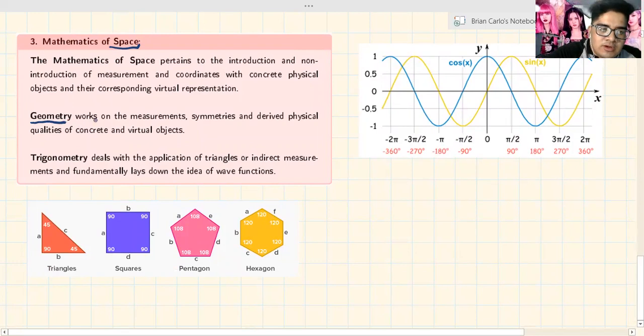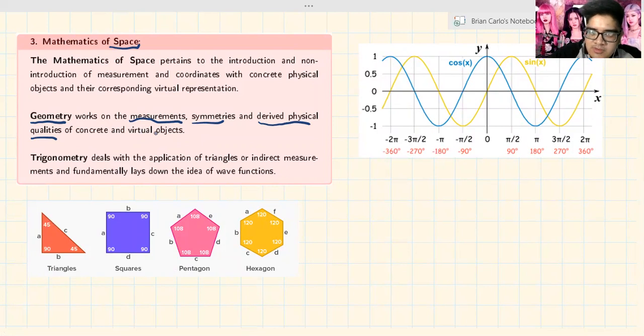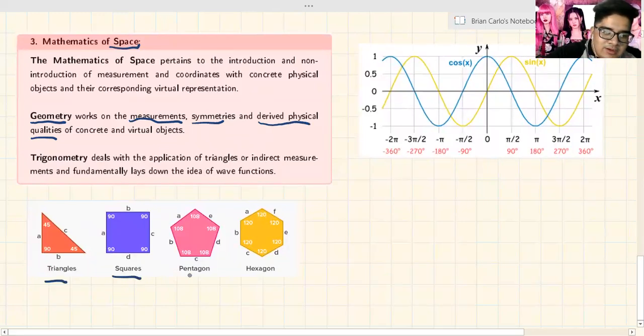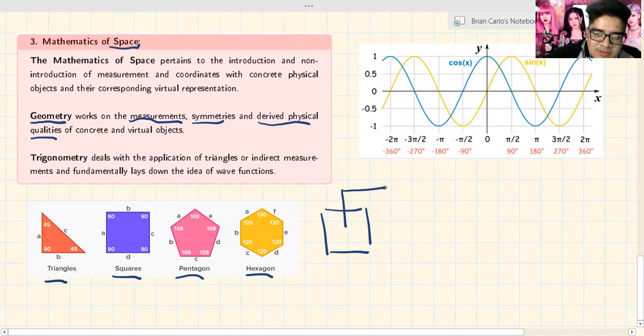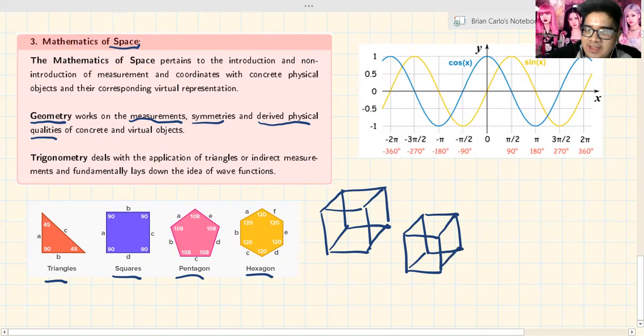First is geometry. Geometry works on the measurements, symmetries, and derived physical qualities of concrete and virtual objects. Basically, geometry talks about shapes - talks about physical objects. Examples of shapes we've known since we were kids are triangle, squares, pentagon, hexagon, etc. It doesn't just cover two-dimensional figures, there are three-dimensional figures too. For example, a cube. How do we draw a cube? We draw two squares like this, then connect them. That's a cube.